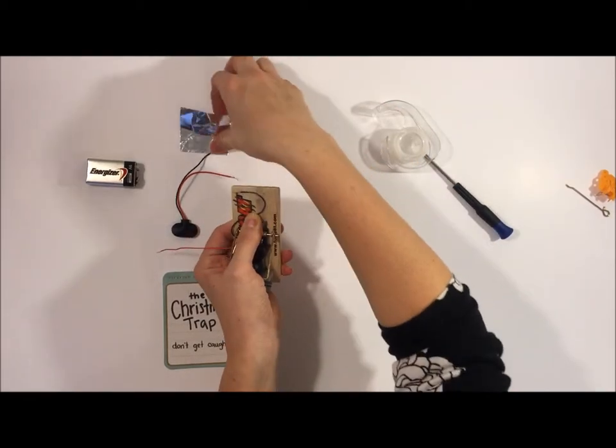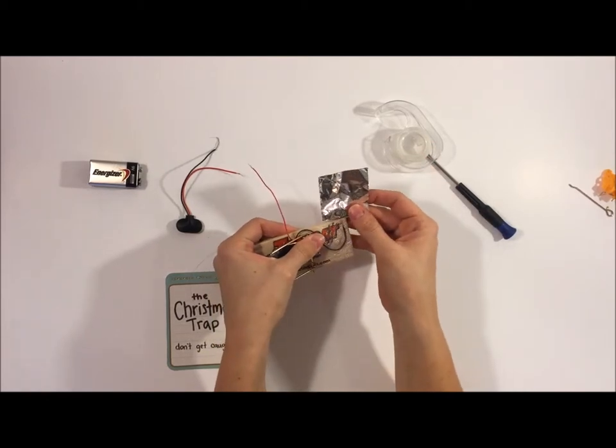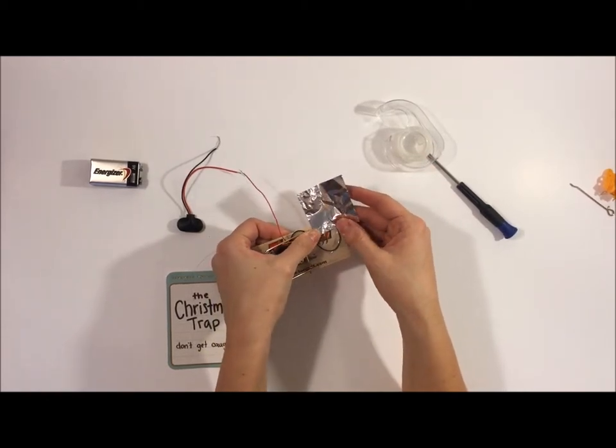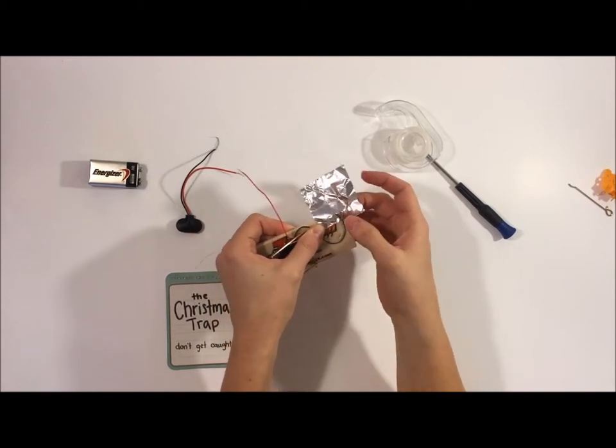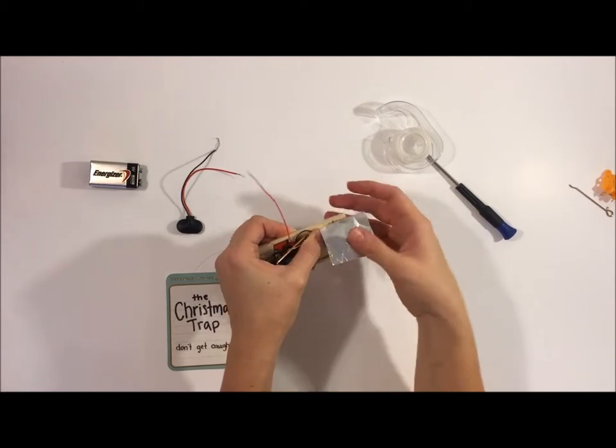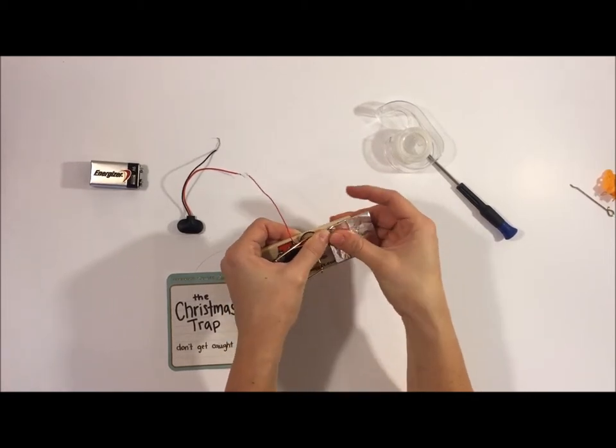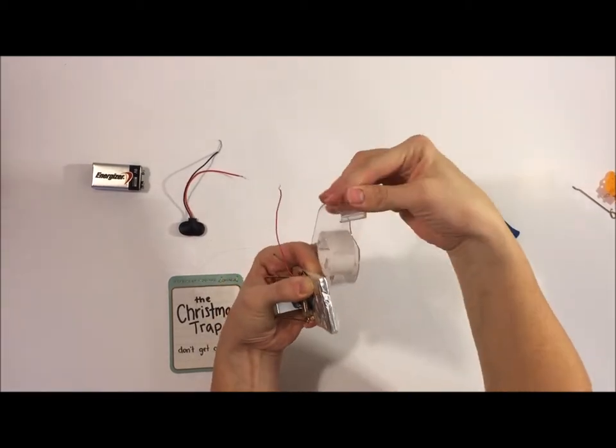Okay, and then for this next bit you want to just make sure there's a lot of area for connection. So you're gonna go ahead and slip the tinfoil underneath your exposed wire here, and then go ahead and fold it over on top. And then you're gonna want to secure the tinfoil with some more tape.